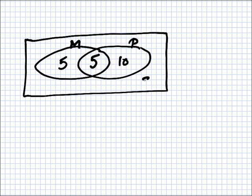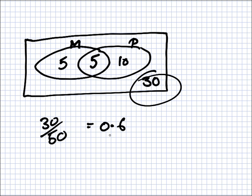Altogether that's 20, so there must be 30 outside here. What's the probability that the randomly selected student did not pass a test? So that's these 30 here, so 30 out of 50, which is 0.6, which is one of the answers.